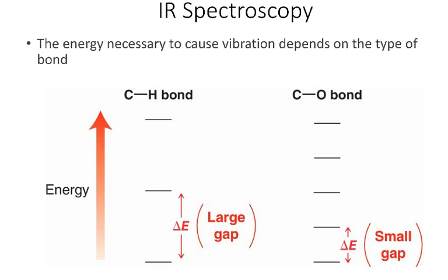Not all bonds are excited by the same amounts of energy. For example, a C–H bond requires significantly more energy to be excited than a C–O bond. In order to cause an excitation in a C–H vibration, you need significantly higher energy electromagnetic radiation, whereas less energetic radiation is required to excite a carbon–oxygen bond. Carbon–oxygen bonds in different molecules tend to have similar energy gaps, so a C–O bond in two different molecules is going to be excited by similar wavelengths or frequencies of electromagnetic radiation.